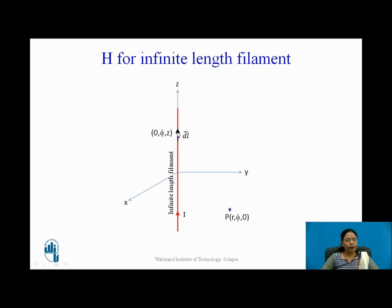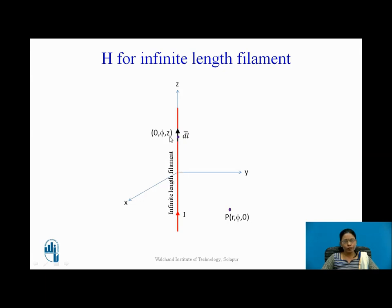Let us consider the point where I have taken the small length of the filament. That point is 0, phi, Z. The coordinates are 0, phi, Z because: the radius at this point is 0 since it lies on the Z axis; phi because the filament passes through some plane phi; and Z because it is at a certain height from the origin.